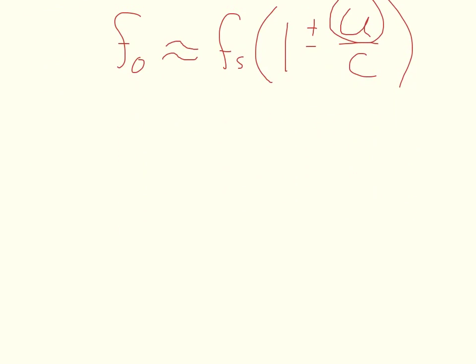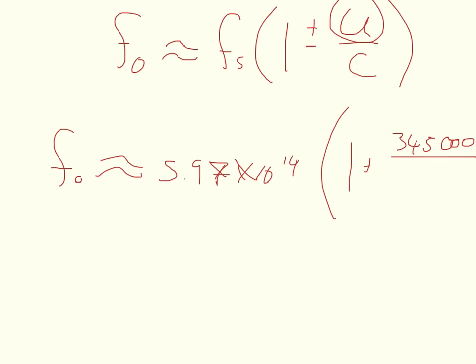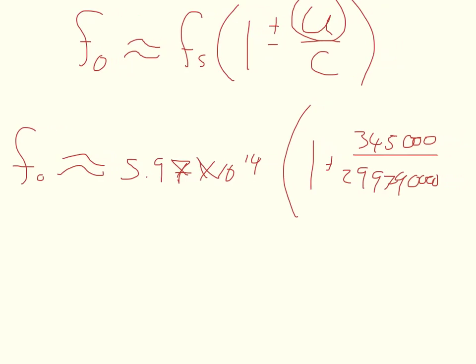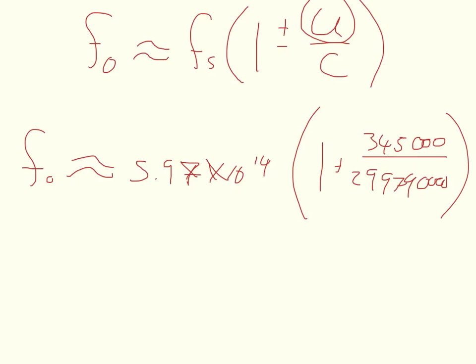Okay, so in our case, the frequency observed f0 is going to be approximately equal to 5.97 times 10 to the 14th, times 1 plus u is 345,000 meters per second, divided by 299,790,000. And parenthesis closed.